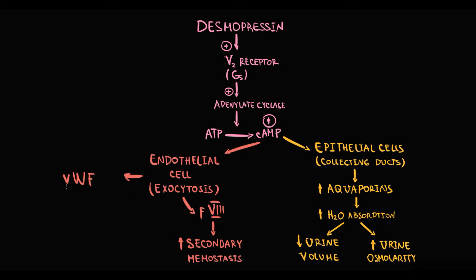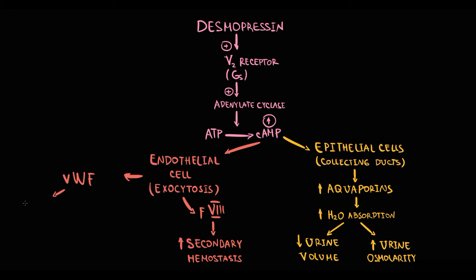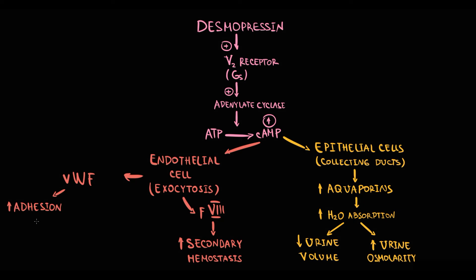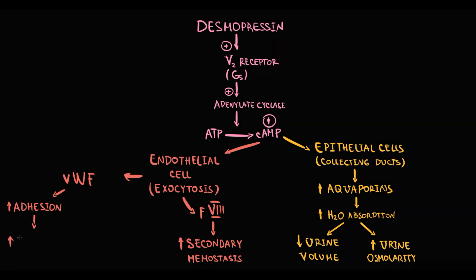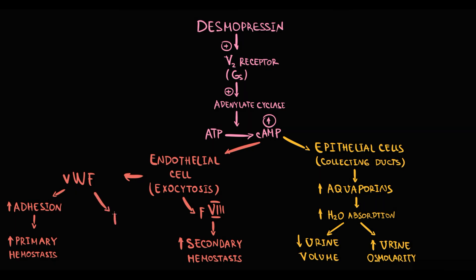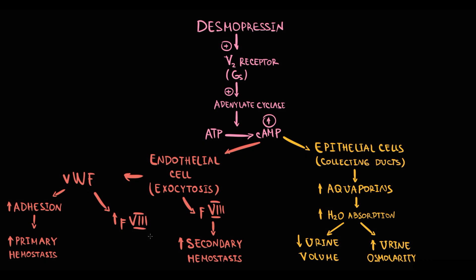Von Willebrand factor has two functions. The major function is that von Willebrand factor provides platelet adhesion in primary hemostasis, so desmopressin by causing exocytosis of von Willebrand factor can improve primary hemostasis. The minor function of von Willebrand factor is that it serves as a protein carrier for factor VIII. So the higher the amount of von Willebrand factor in the blood, the higher the amount of activated factor VIII, and thereby the higher the activity of secondary hemostasis.